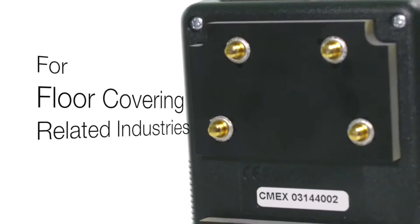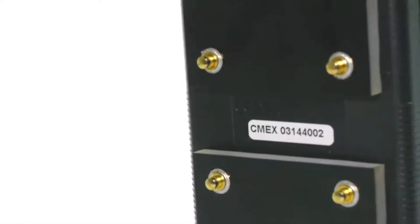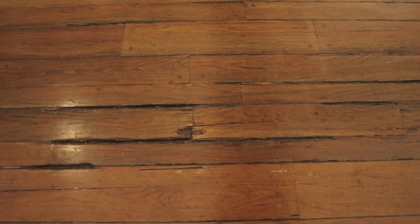The Tramex Moisture and Humidity Testing System for floor covering related industries has been developed to help users avoid moisture related problems in flooring and to identify the cause of problems if they do occur.